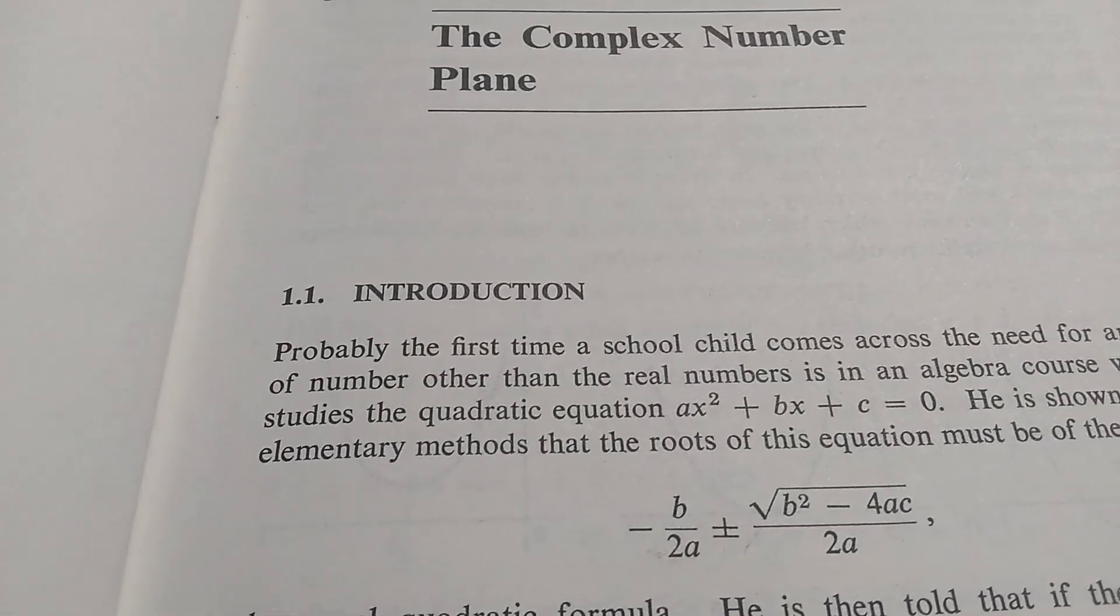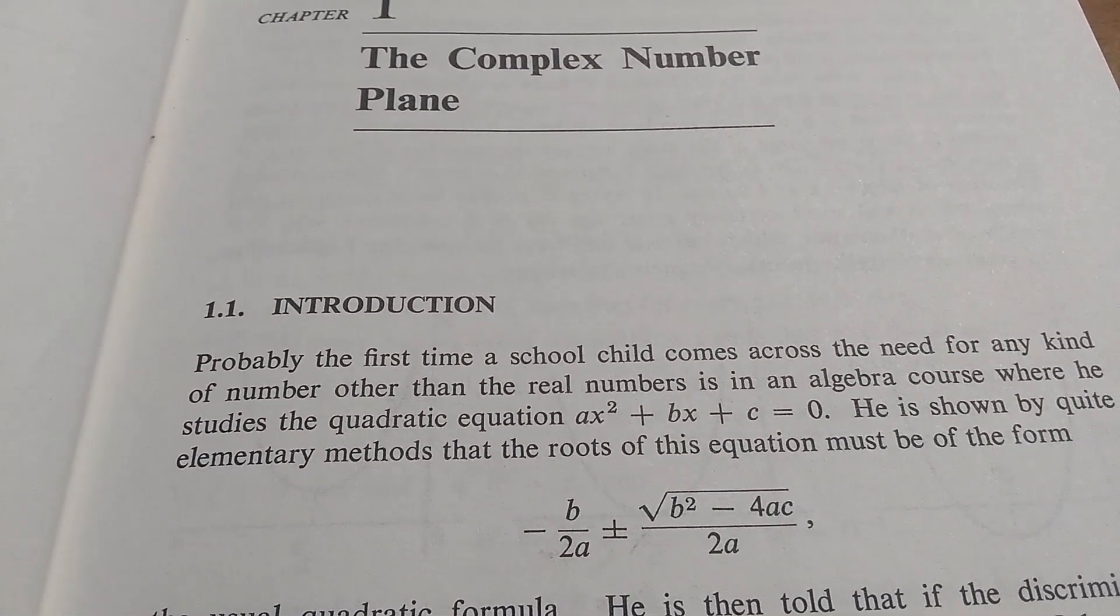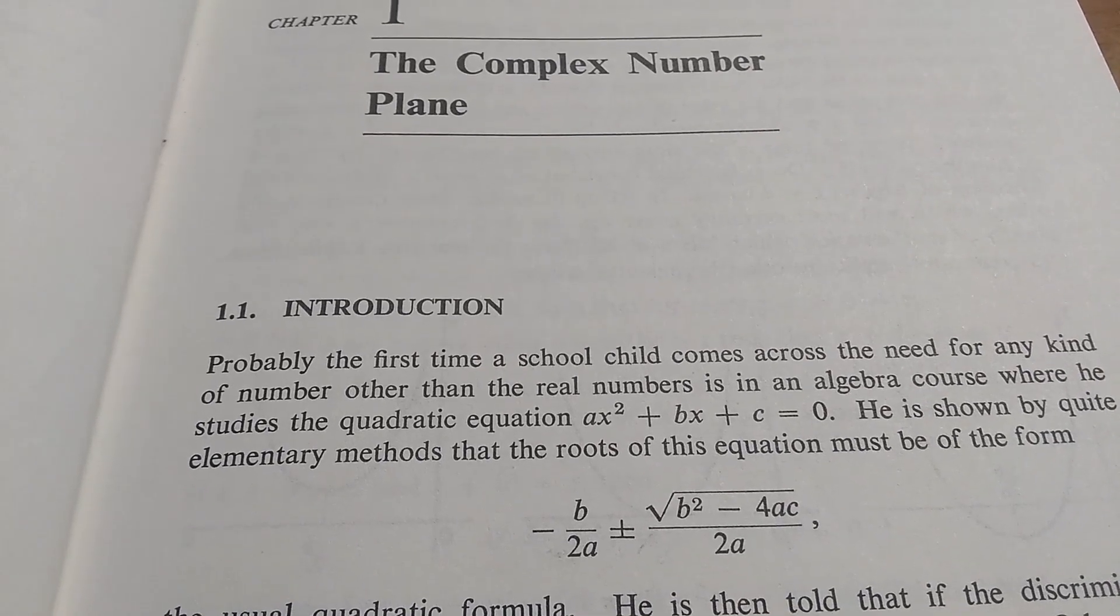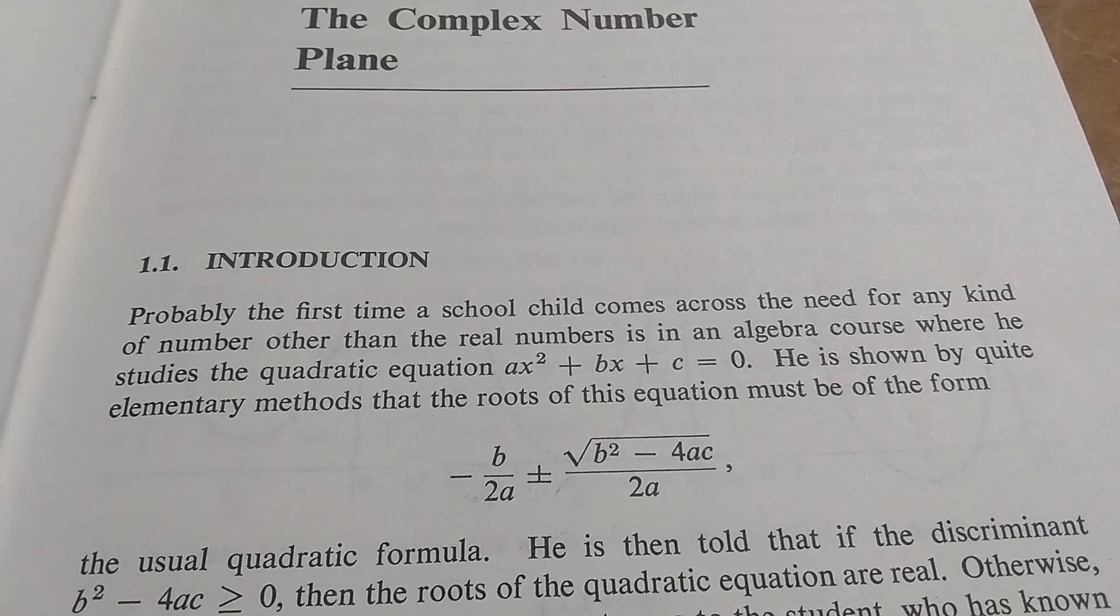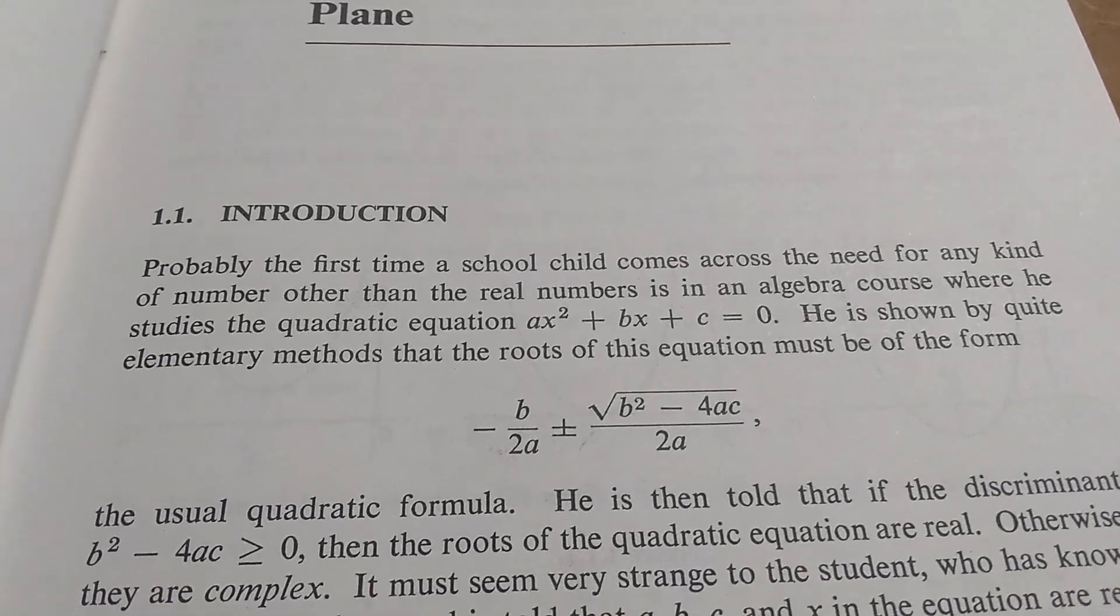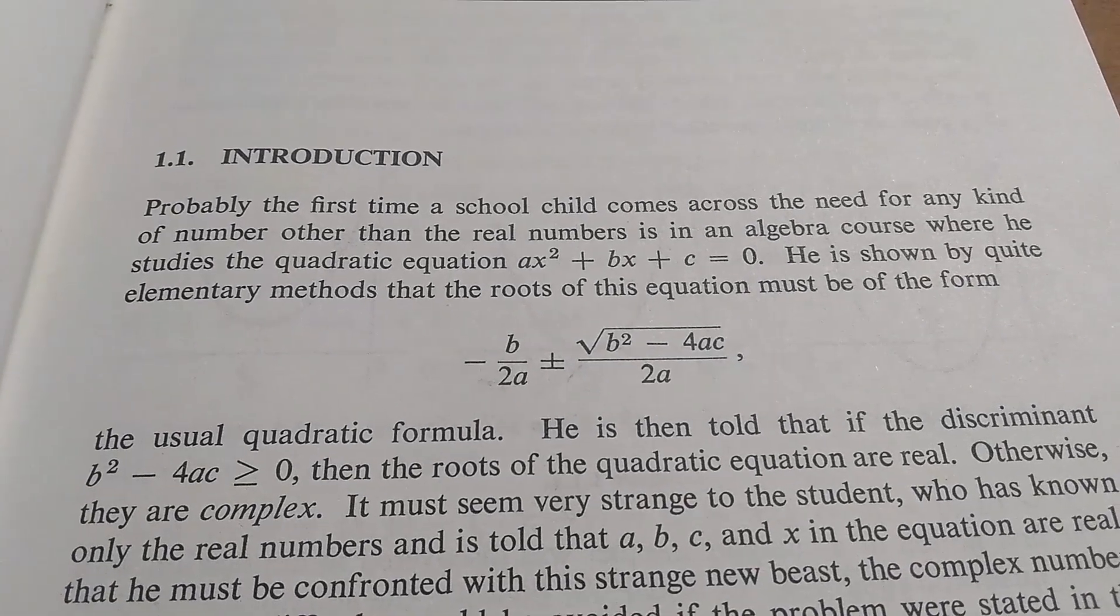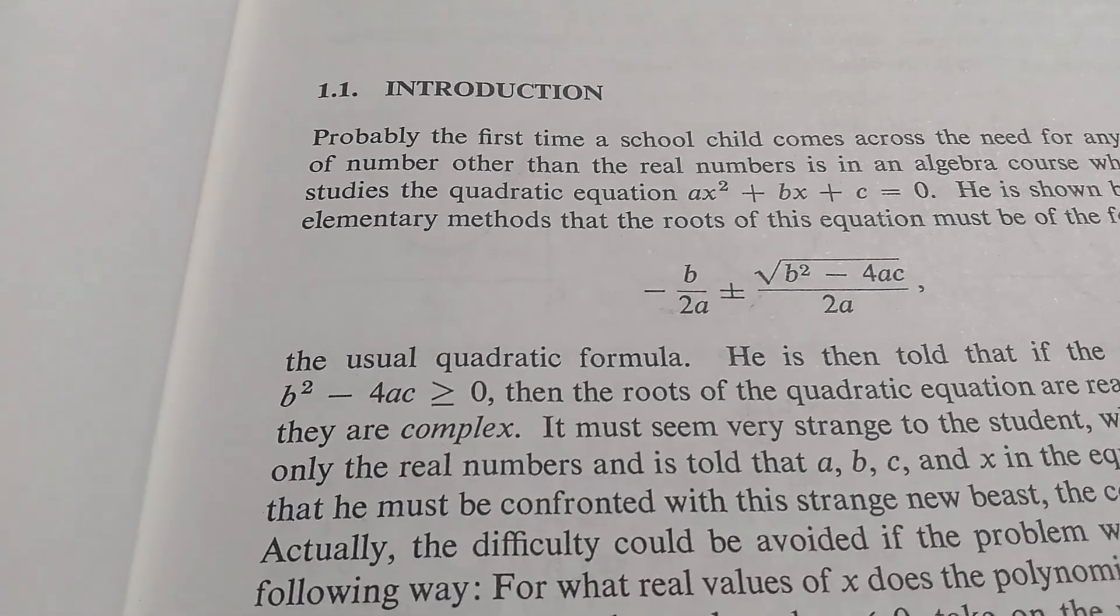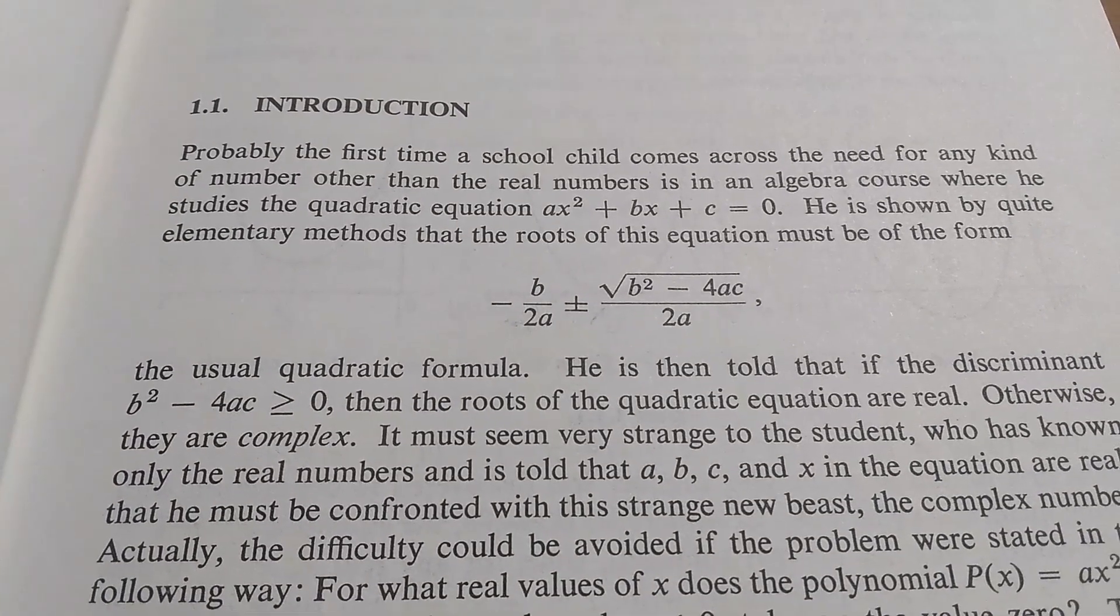Probably the first time a schoolchild comes across the need for any kind of number, other than the real numbers, is in an algebra course where he studies the quadratic equation. He is shown by quite elementary methods that the roots of this equation must be of the form, the usual quadratic formula. He is then told that if the discriminant is non-negative, then the roots of the quadratic equation are real. Otherwise, they are complex.